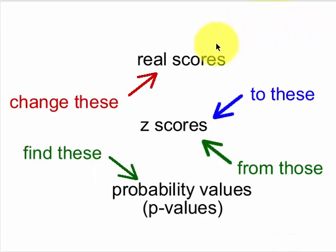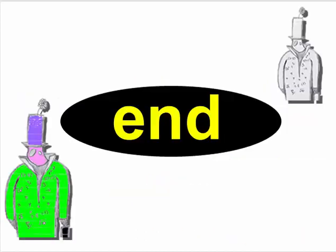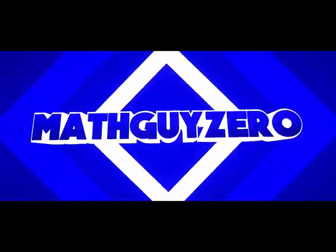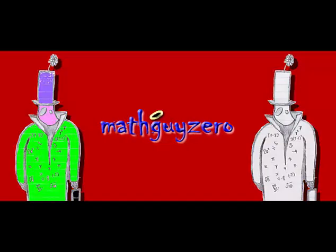In a nutshell, you take real scores, you standardize them, change them into Z scores. Because we have the Z tables, the data has to fit a normal distribution curve. So we change the real test scores into Z scores. And from the Z scores, we find the p-values. And I really hope that worked. But that's it. MGZ, out. Math Guy Zero.